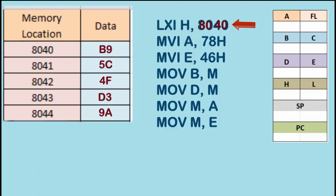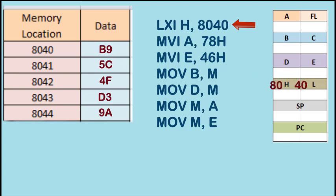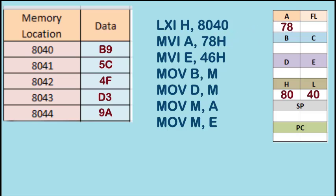We start with LXI H. As we know, LXI H will store the data 80 in H and 40 in L. That is the first instruction. With MVI A, the data 78 gets stored in register A. With MVI E, the data 46 gets stored in register E.